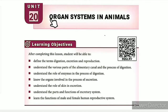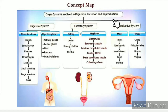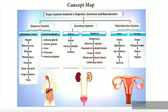This unit guide is listed in the description box. A concept map is provided for this lesson. In total, three topics are covered: digestion, excretion, and reproduction — that is, the digestive system, excretory system, and reproductive system.